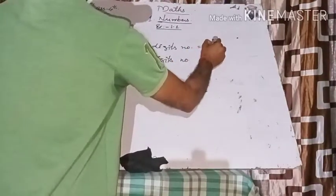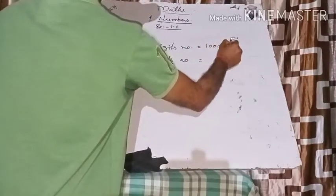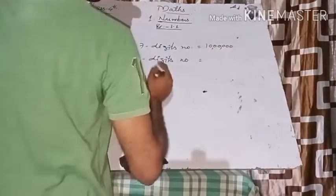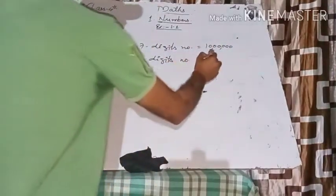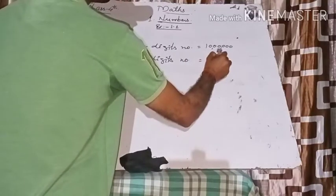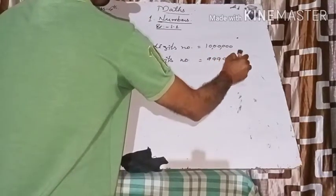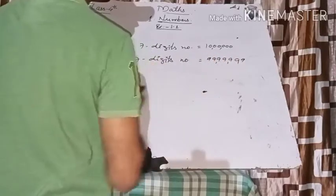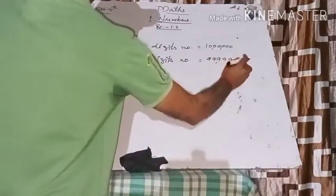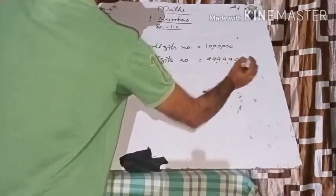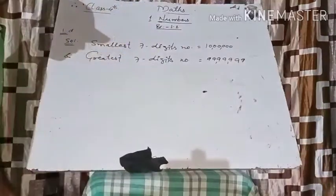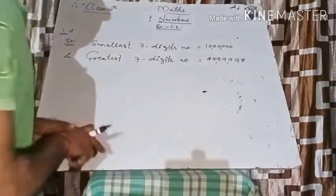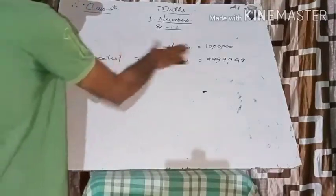The smallest seven-digit number is 1000000 and the greatest seven-digit number is 9999999. Now you understand how to write the answer to this type of question.